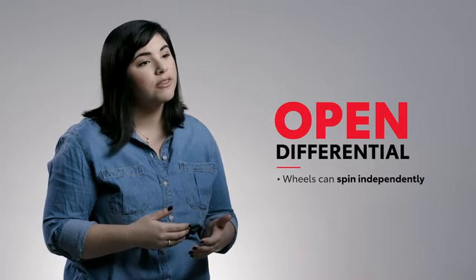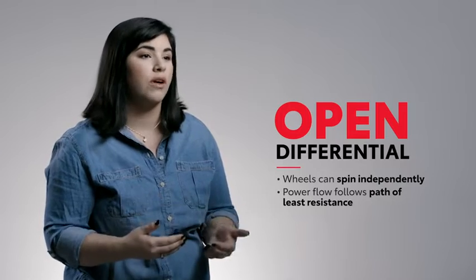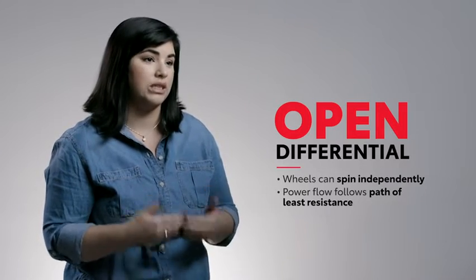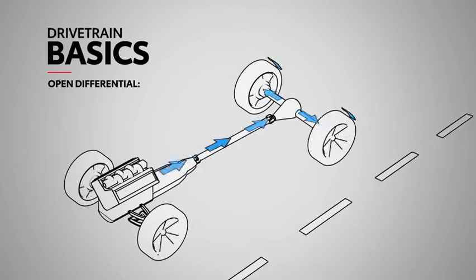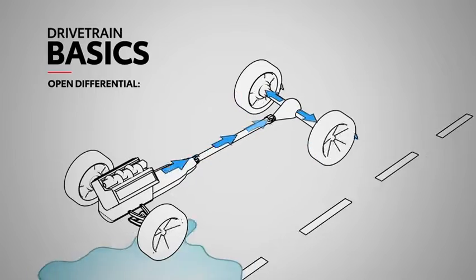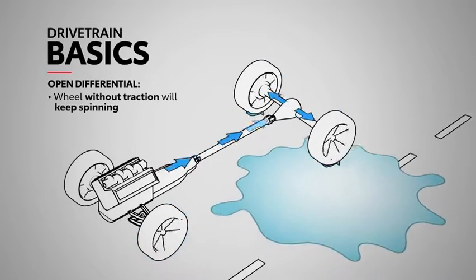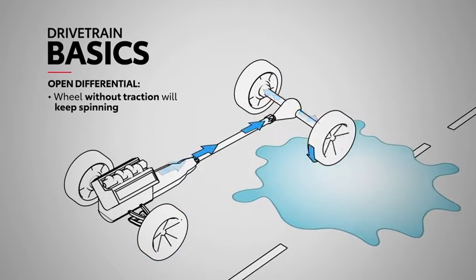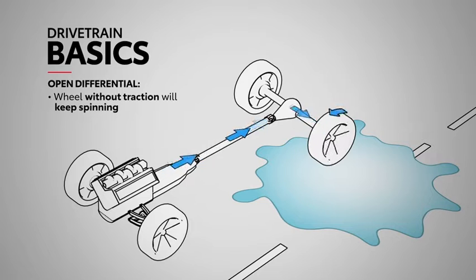But with an open differential, the power flow is always going to follow the path of least resistance. So if one wheel starts to spin — say on a patch of ice or mud — the power flow will simply keep spinning that wheel, sending a hundred percent power to it instead of the one with traction.